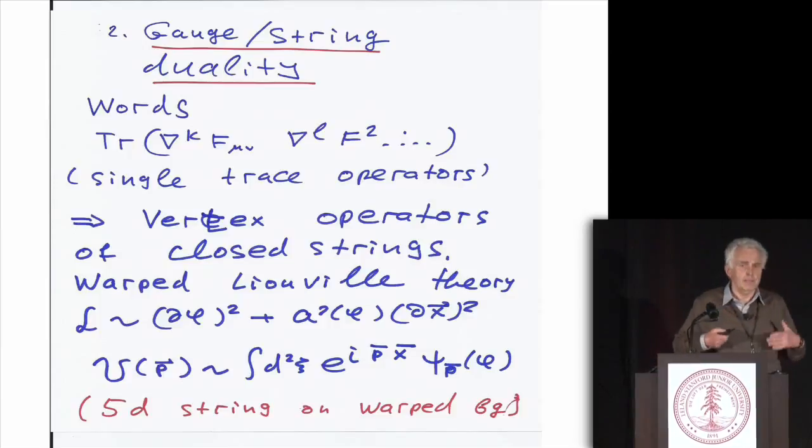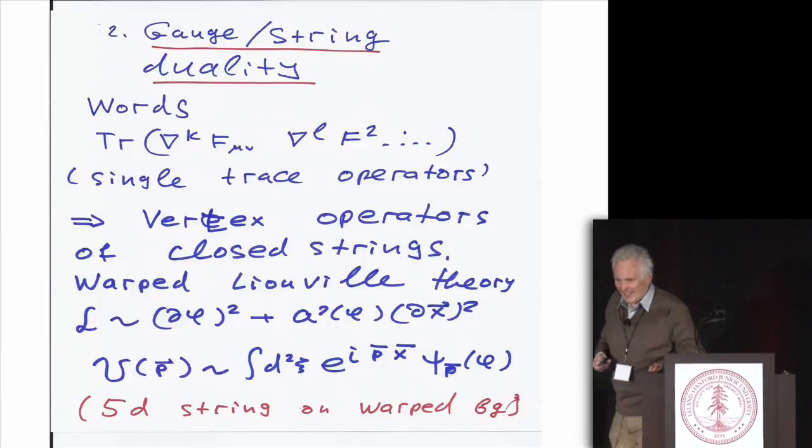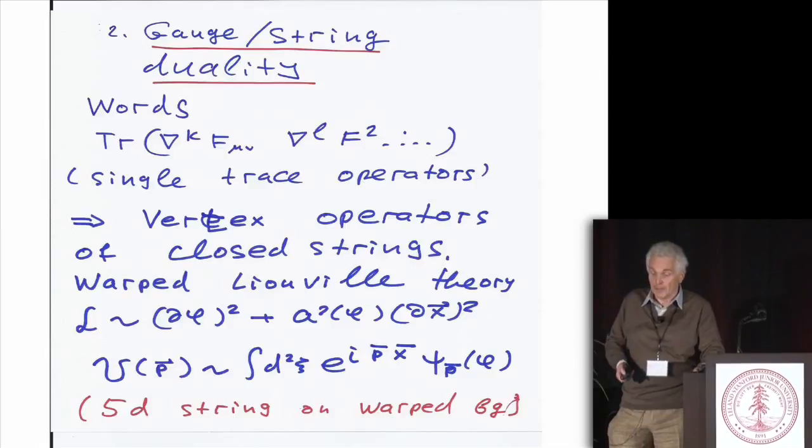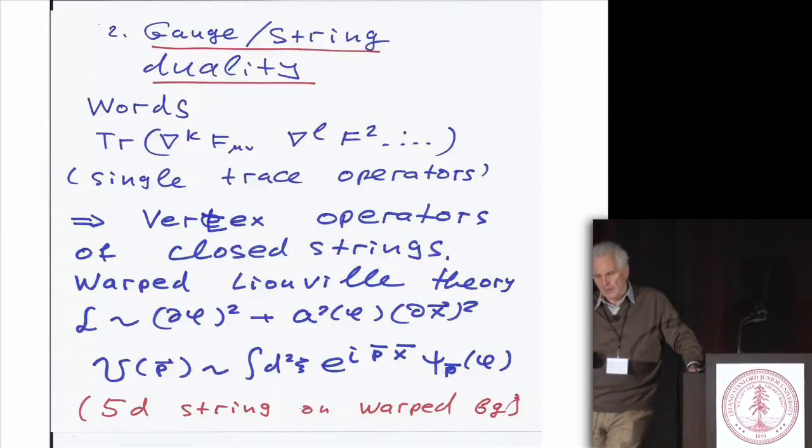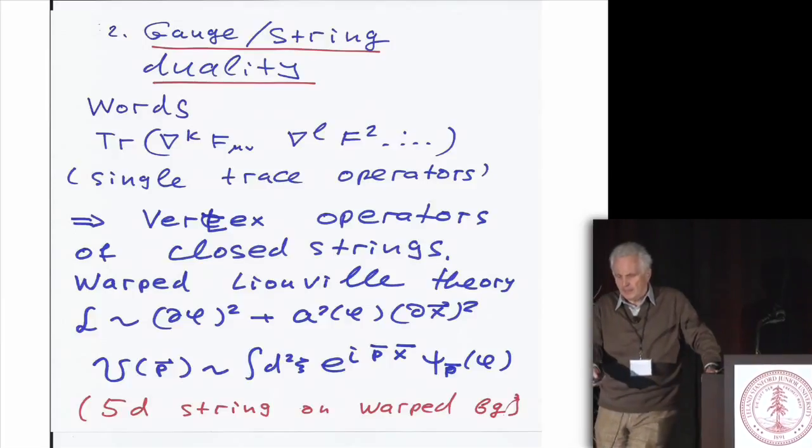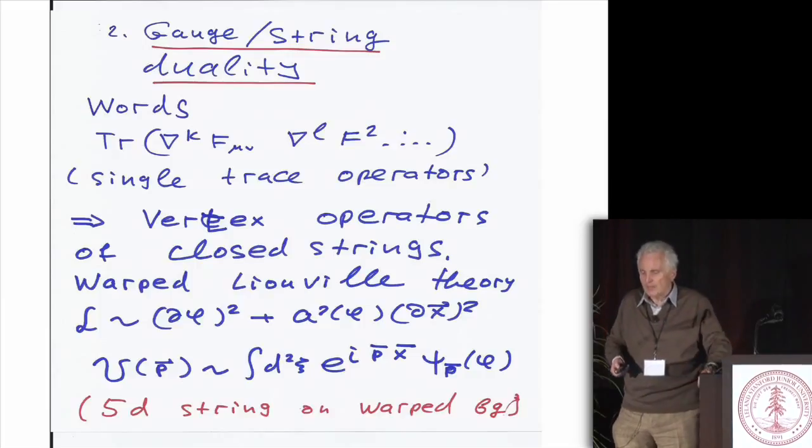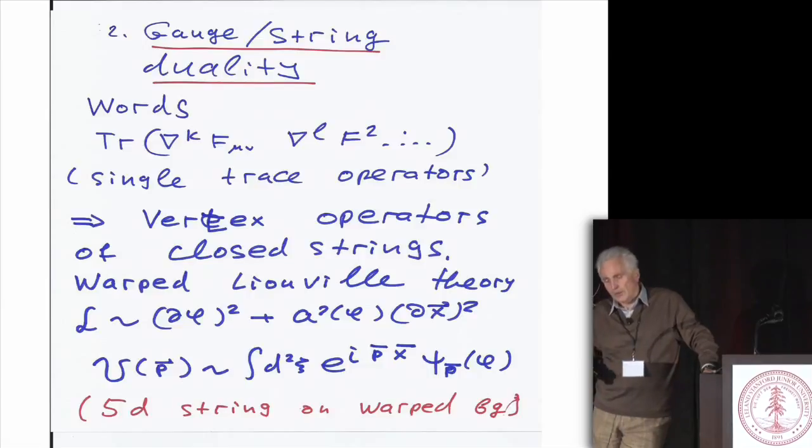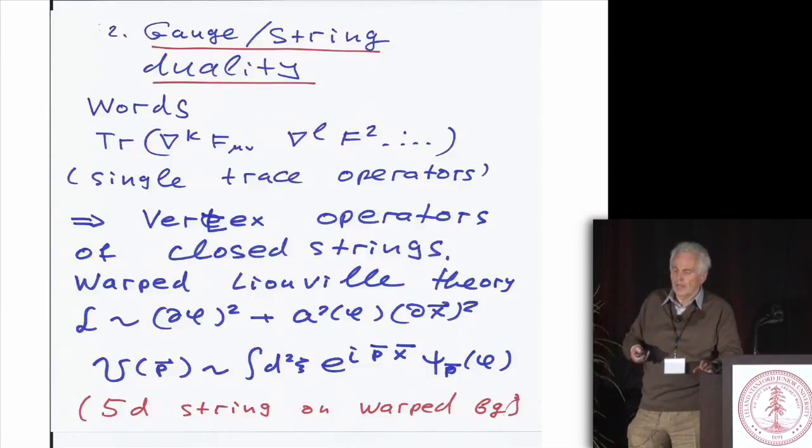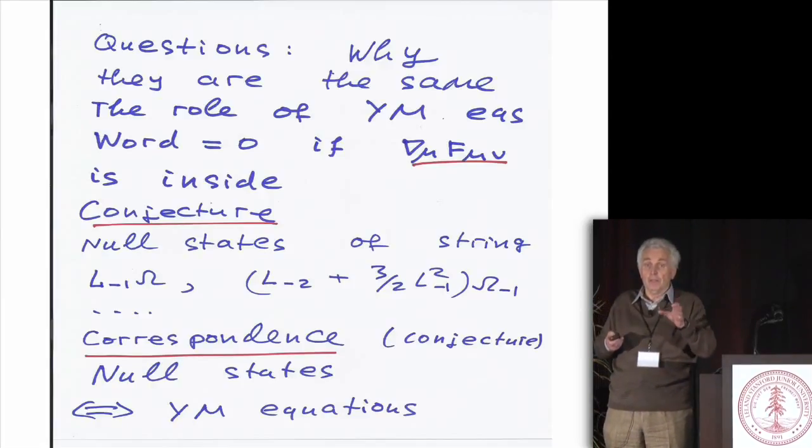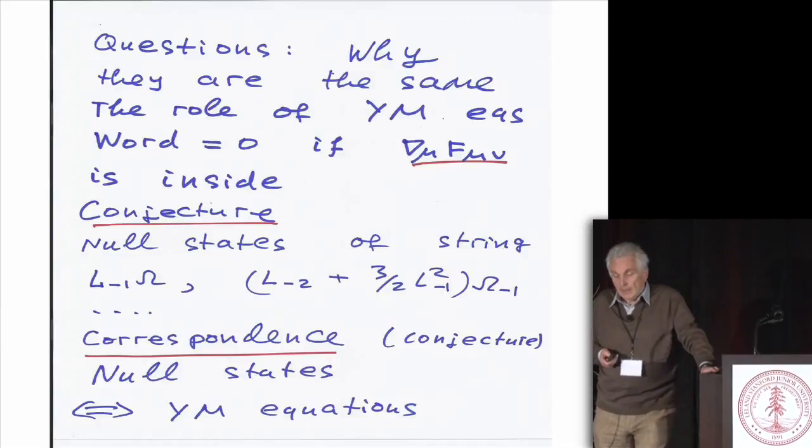And you can formulate it as the isomorphism between words and vertex operators. You can say that in the beginning it was the word, but then we relate it to the vertex operators. And I shall not go into details, obviously. But it should be the vertex operators of at least five-dimensional non-critical or critical string. And these fifth dimensions should be warped.